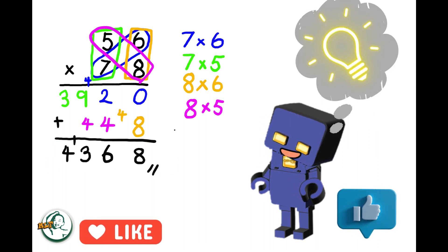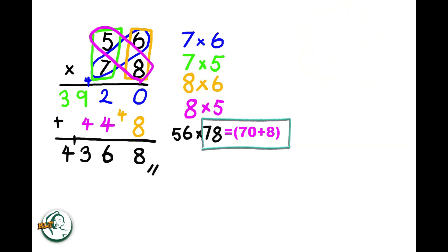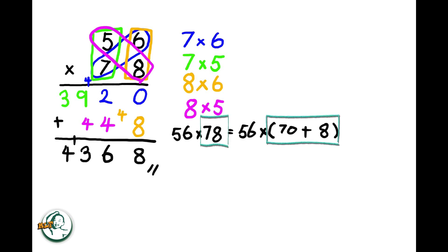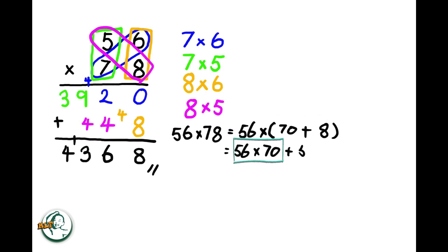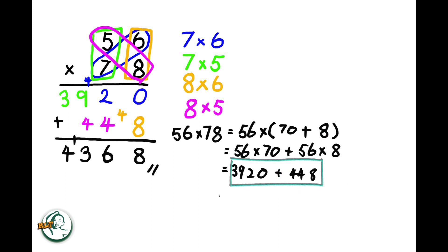Let's delve into the rationale behind this method. Consider 78 as 70 plus 8. Now, we can express 56 times 78 as 56 times (70 plus 8). This expands into 56 times 70 plus 56 times 8. Calculating, we get 3920 for 56 times 70 and 448 for 56 times 8. Adding these results together, 3,920 plus 448 equals 4368.